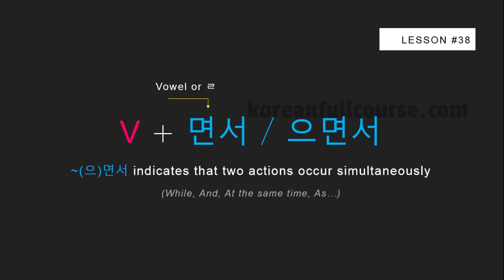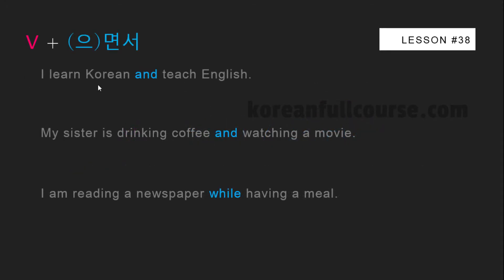If the stem of a verb ends with a vowel or the letter ㄹ, then you need to use 으면서. And if it ends in a consonant, you need to use 면서. In these sentences, two actions are performed by the same person: I learn Korean and I teach English. 저는 한국어를 공부하면서 영어를 가르쳐요.